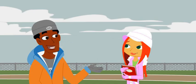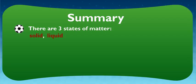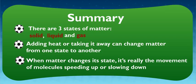All right, let me run through this for you. Tell me if I've got it right. There are three states of matter. Solid, liquid, and gas. Adding heat, or taking it away, can change matter from one state to another. When matter changes its state, it's really the movement of the molecules speeding up or slowing down. How'd I do?